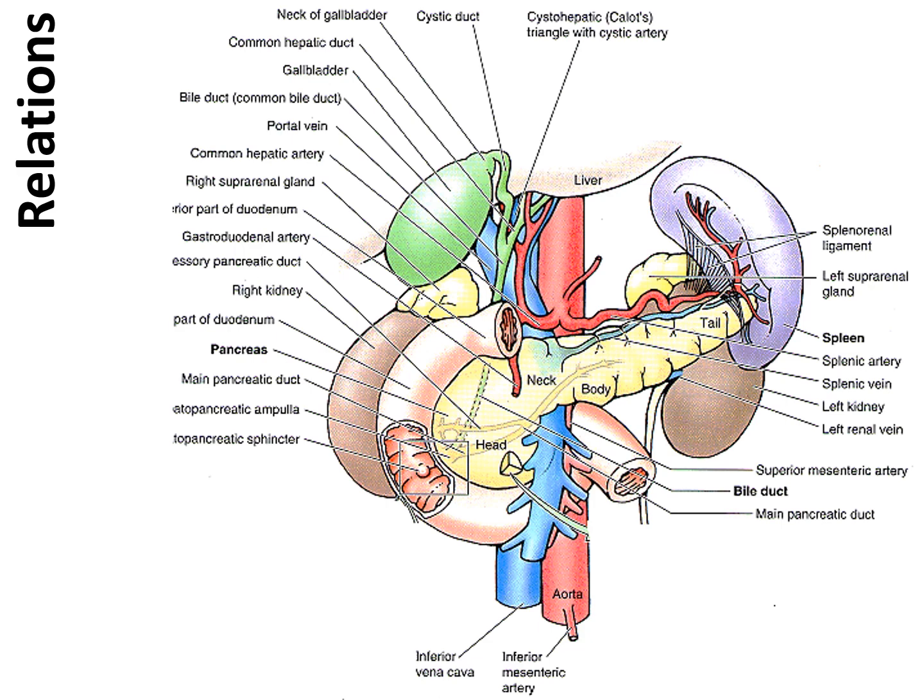The pancreatic duct begins in the tail of the pancreas and runs through the substance of the gland to the head, where it bends inferiorly and merges with the bile duct.